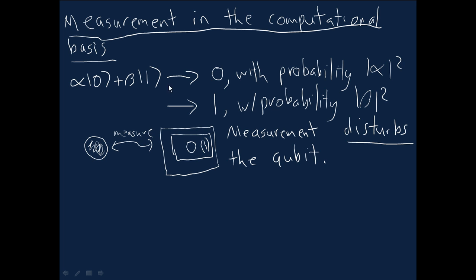After the measurement, after you've done the measurement, if you get the outcome zero, the state of the qubit afterwards is the zero computational basis state.